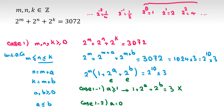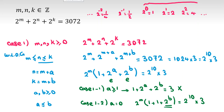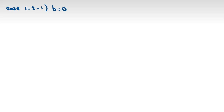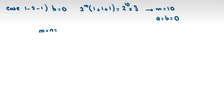Case 1.2: a equals 0. Then we have 2 to the m times (1 plus 1 plus 2^b) equals 2^10 times 3. In sub-case b equals 0: 2 to the m times (1 plus 1 plus 1) equals 2^10 times 3, so 2^m times 3 equals 2^10 times 3, giving m equals 10. Since a equals b equals 0, we have m equals n equals k equals 10. We can check this is correct.